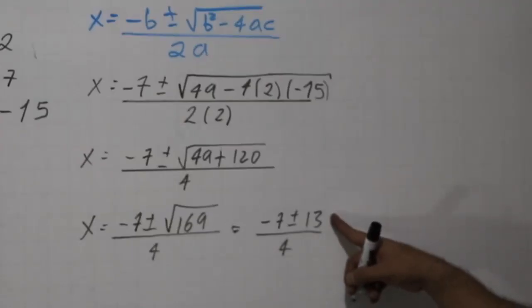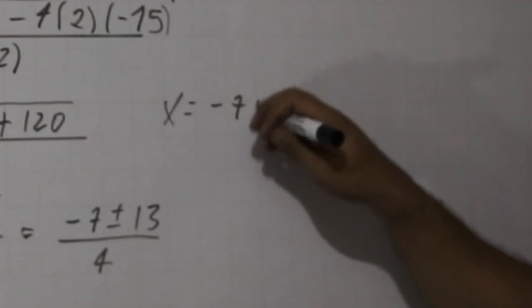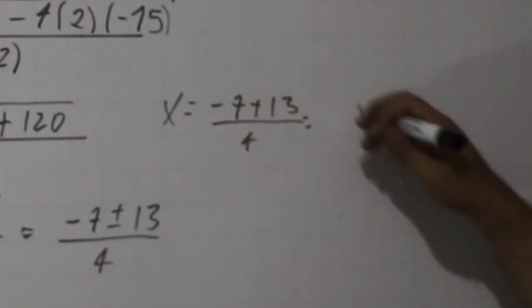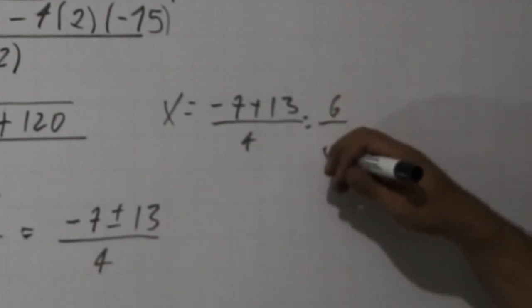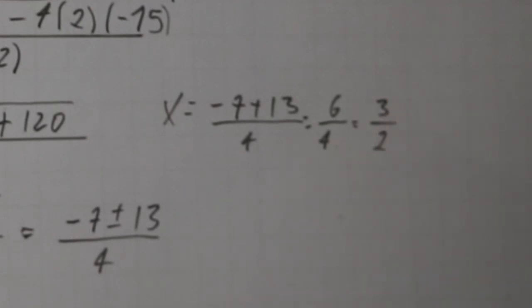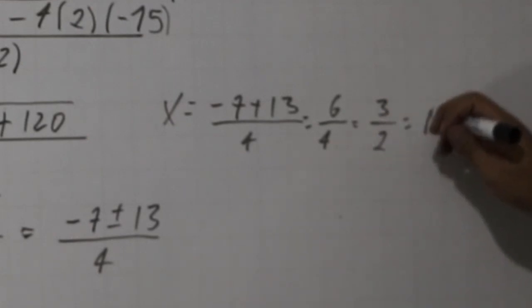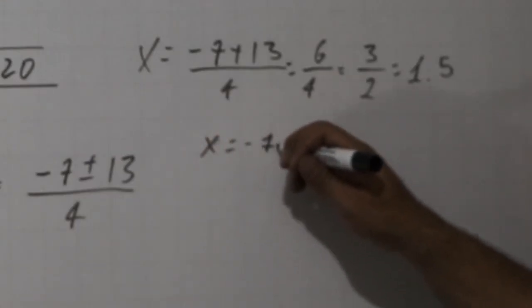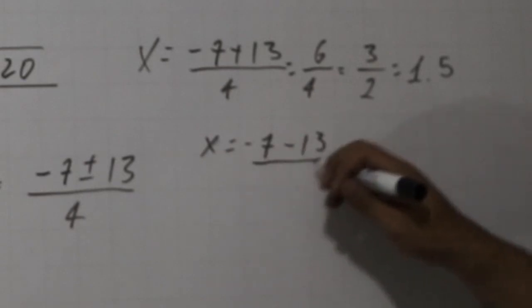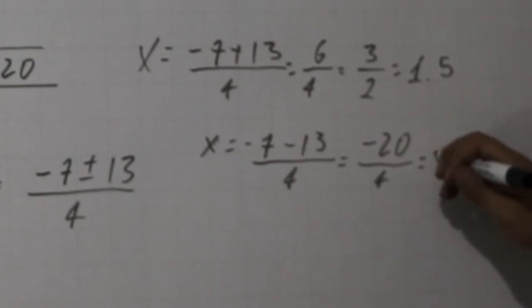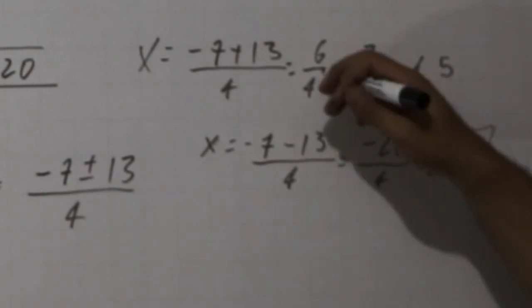If we use positive 13, we're going to get minus 7 plus 13 over 4, so we're going to get 6 over 4. We can simplify that and we get 3 over 2, that's like 1.5. And if we use the negative number, we're going to get minus 7 minus 13 over 4. We're going to get minus 20 over 4. That's minus 5. So we've got two answers.